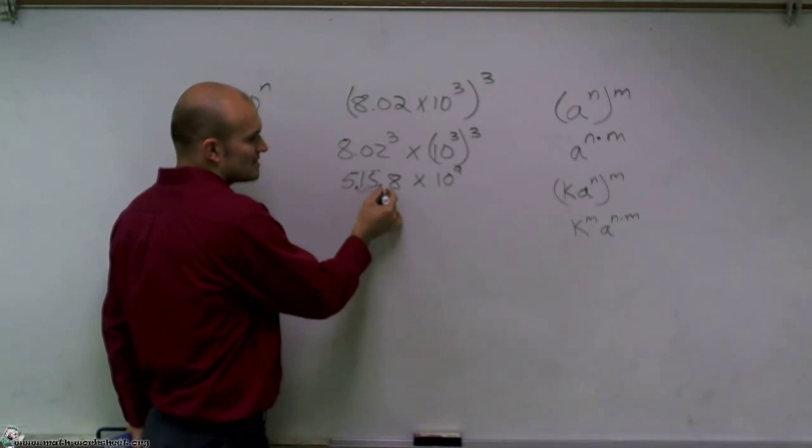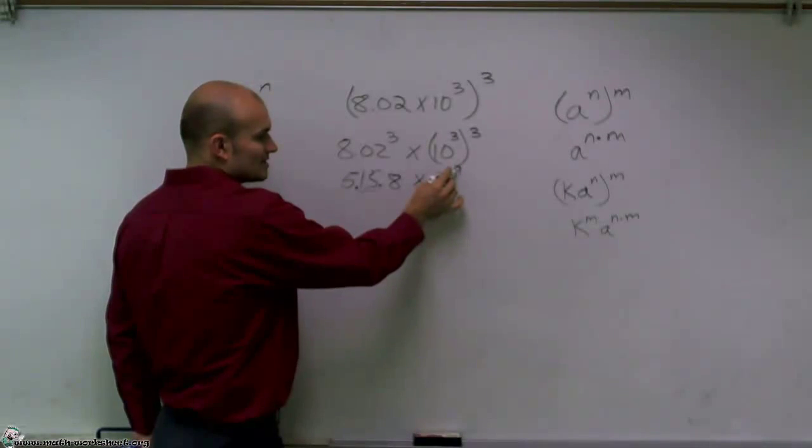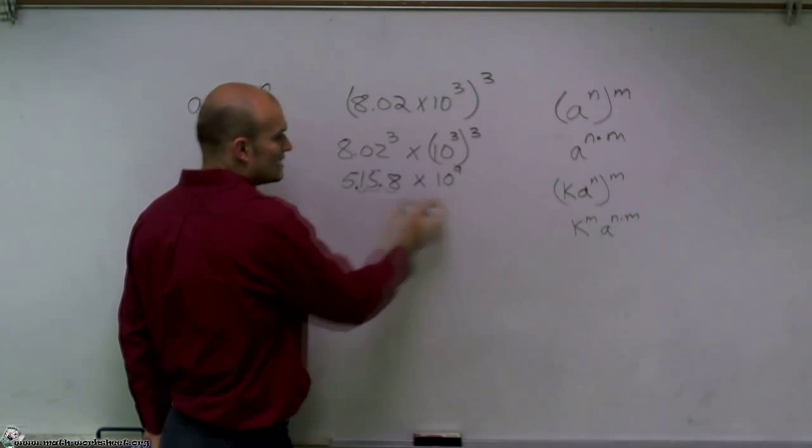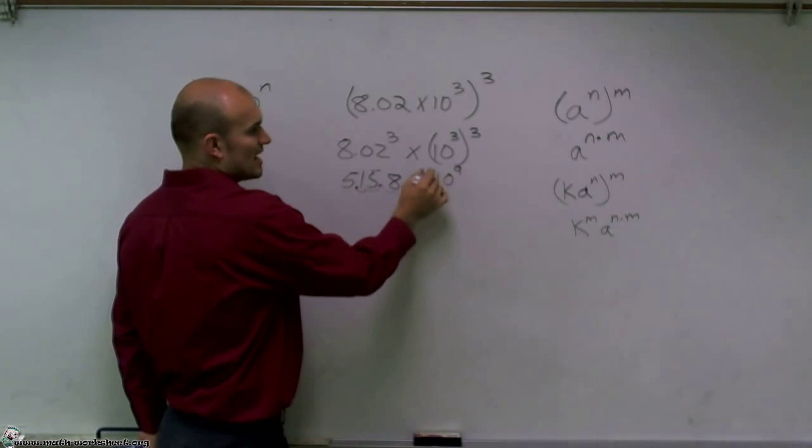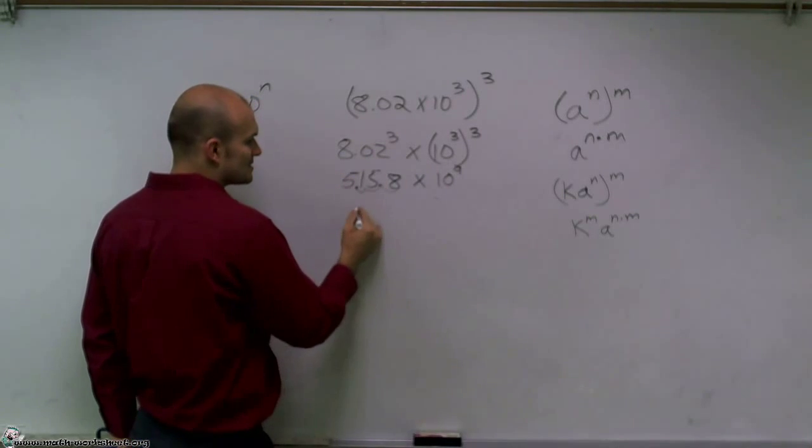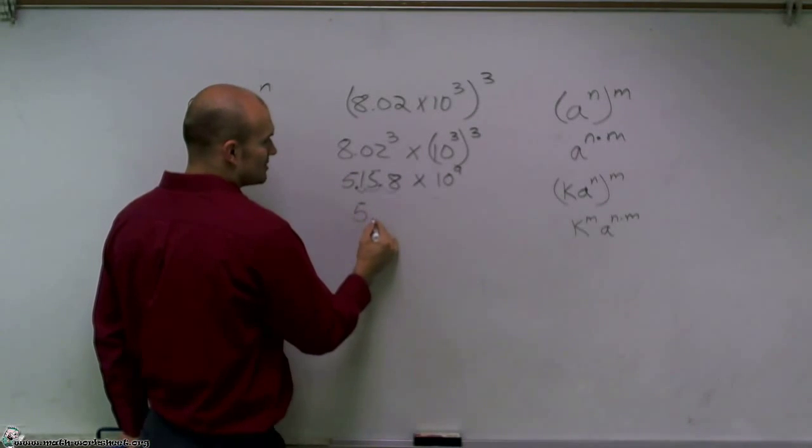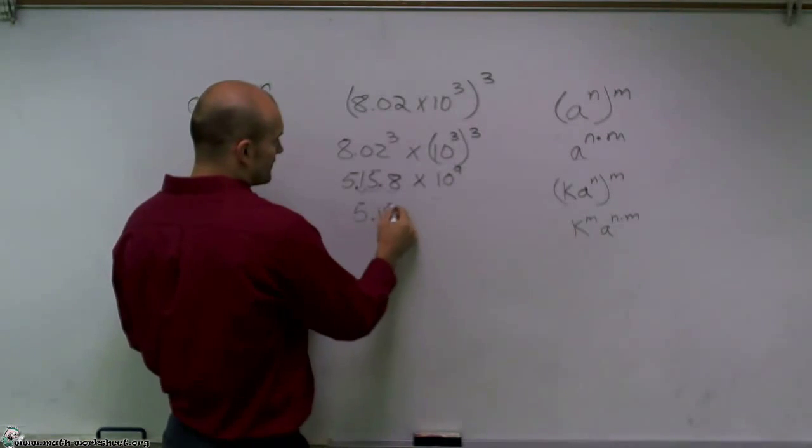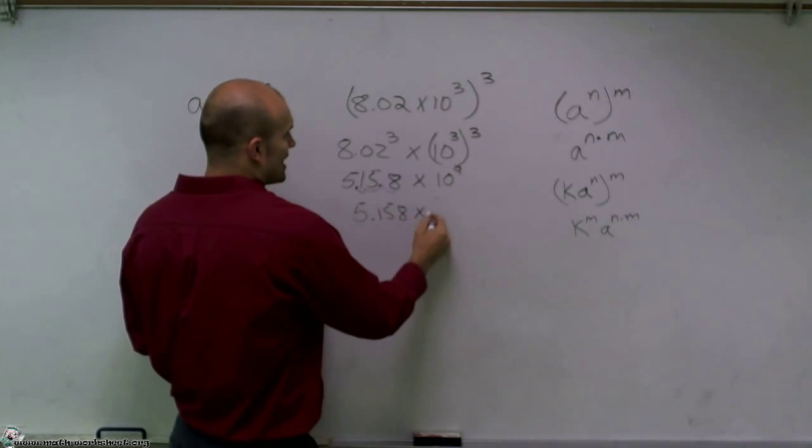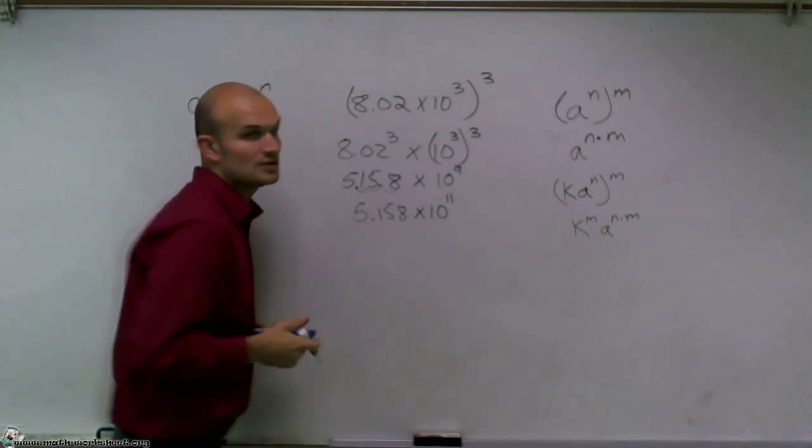So rather than having to go 9 units to the right, because that times 10 to the ninth means 9 units over, now I have to go over 11 more units. So I have to go two more extra spots. So my final answer is going to be 515.8 times 10 to the 11th power.